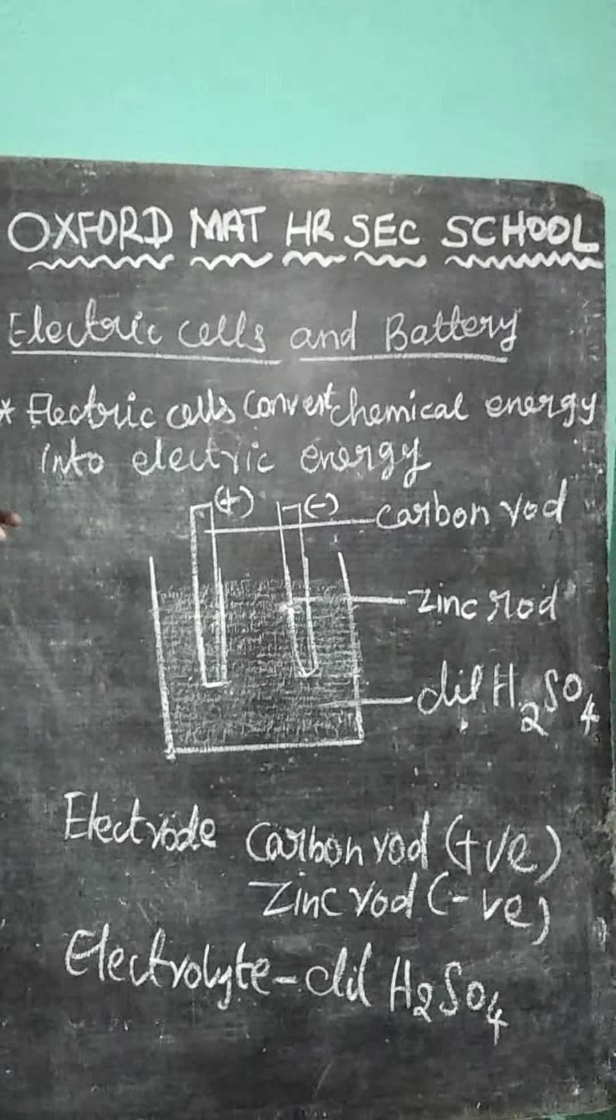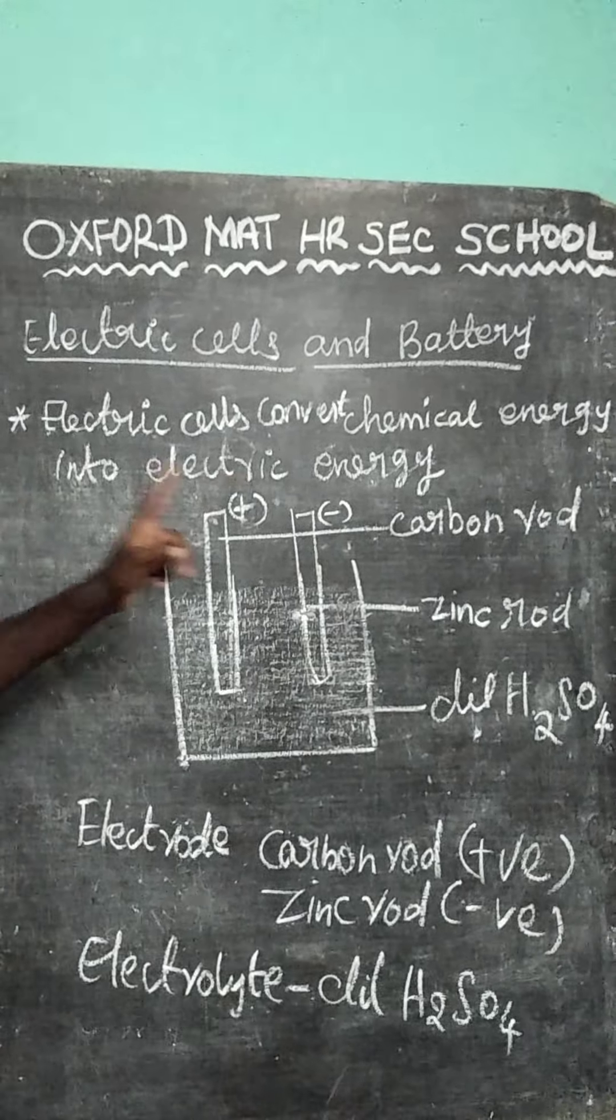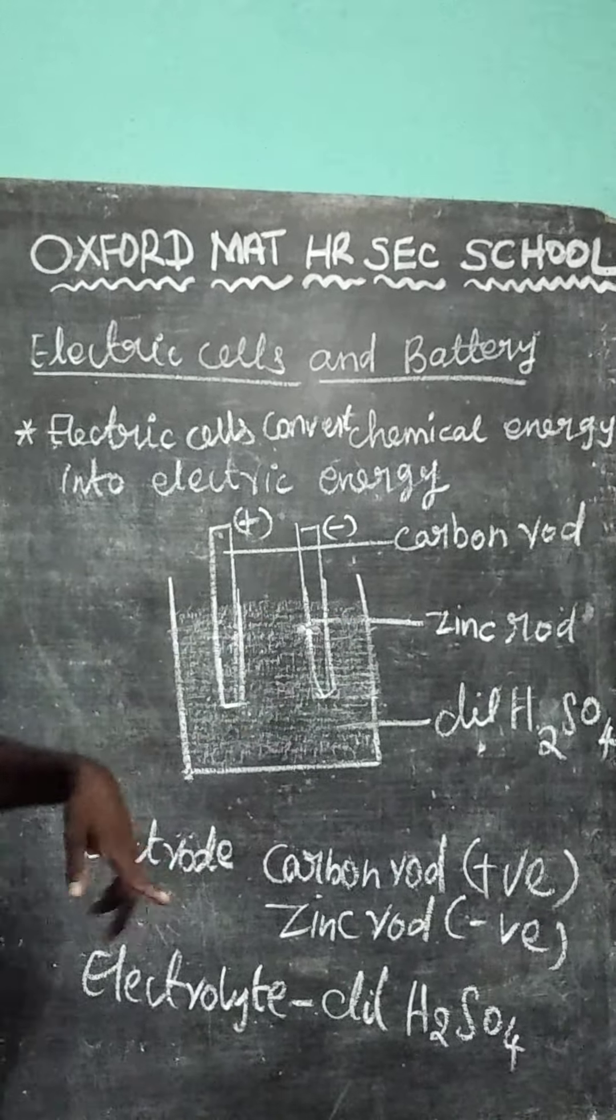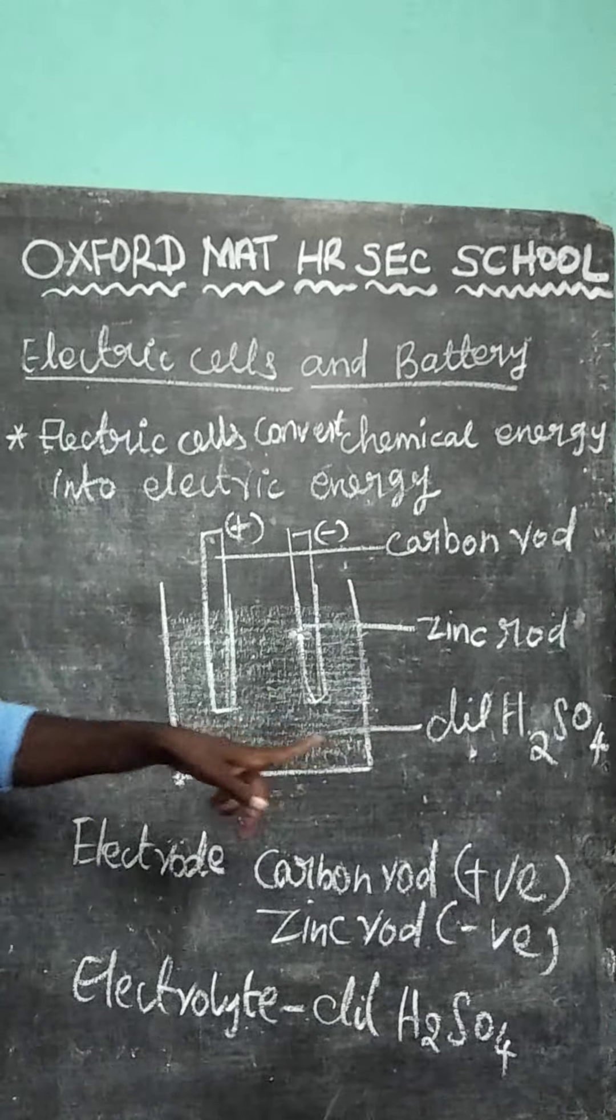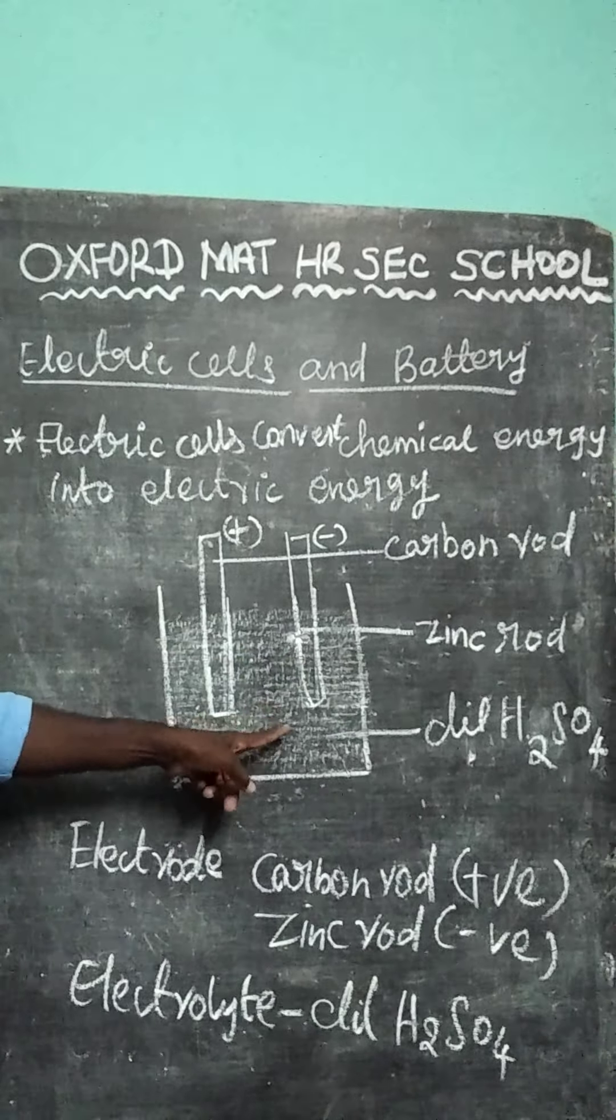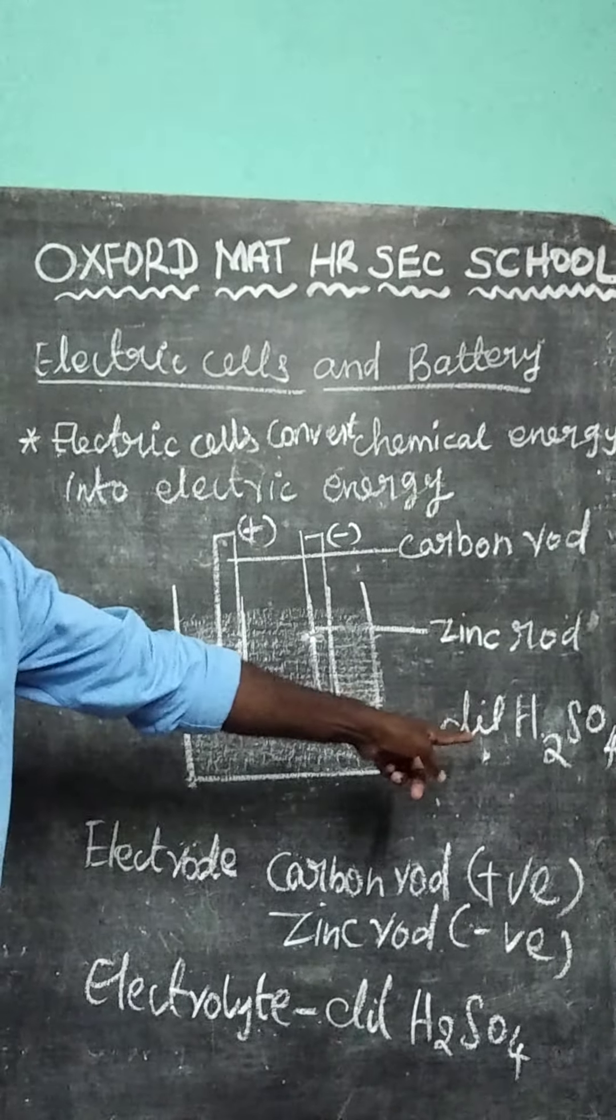It is made up of two electrodes. One is carbon rod. Another one is zinc rod. It contains electrolyte. The two electrodes dip into electrolyte.